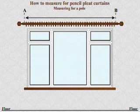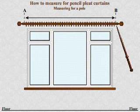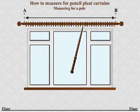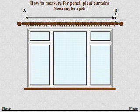To measure for the width of your curtain, simply measure the distance between A and B in centimetres, which is the total length of the pole and excludes the finials.